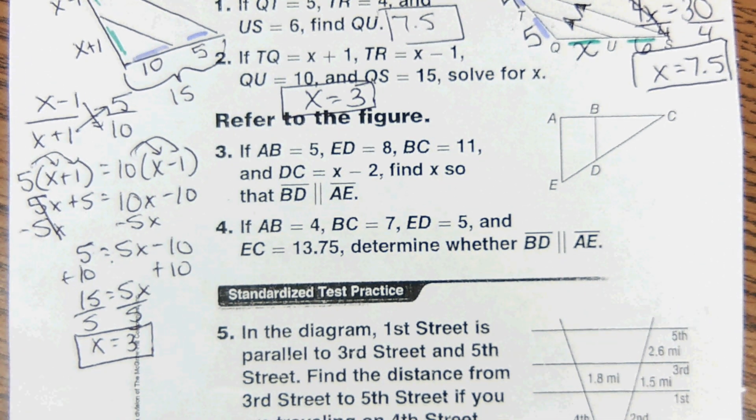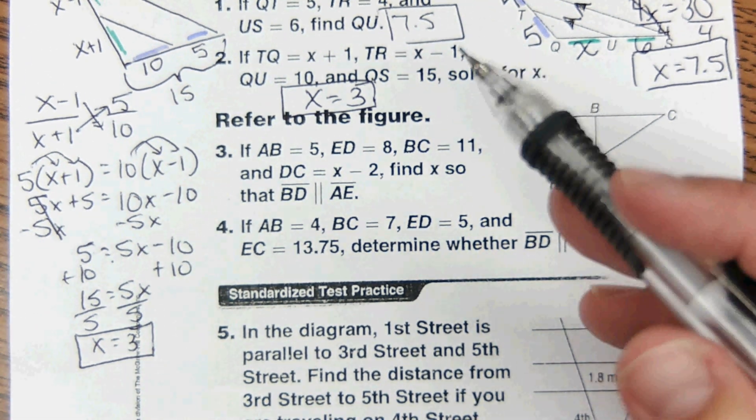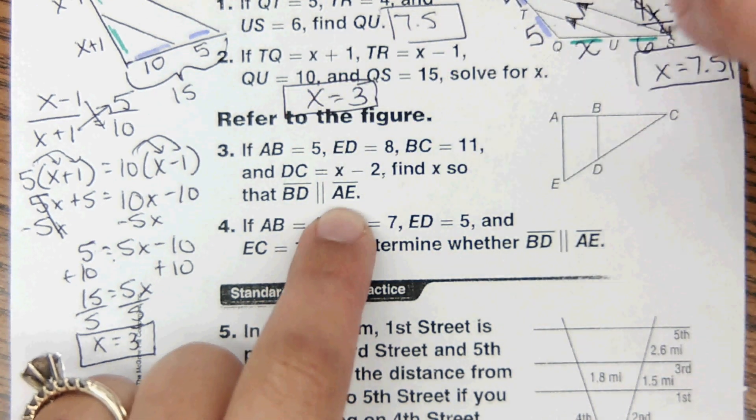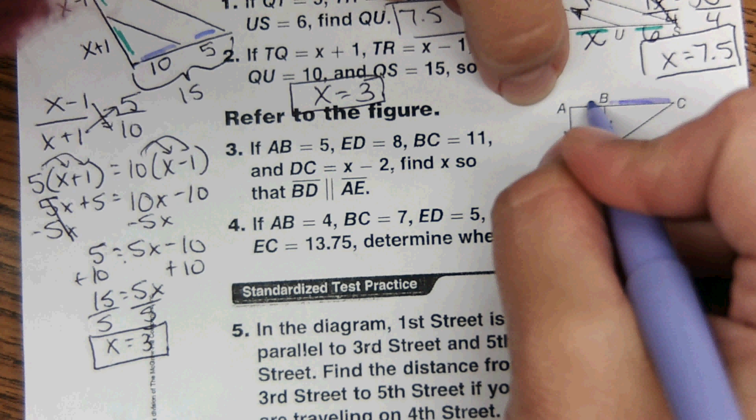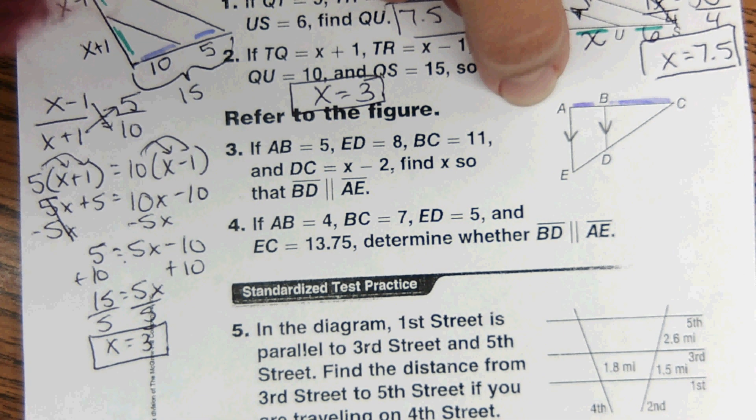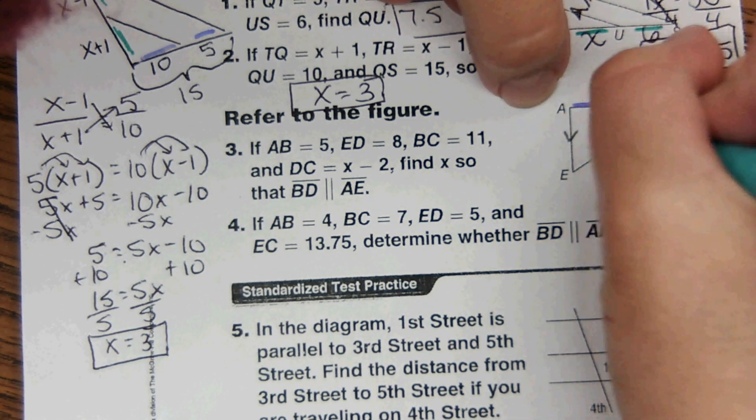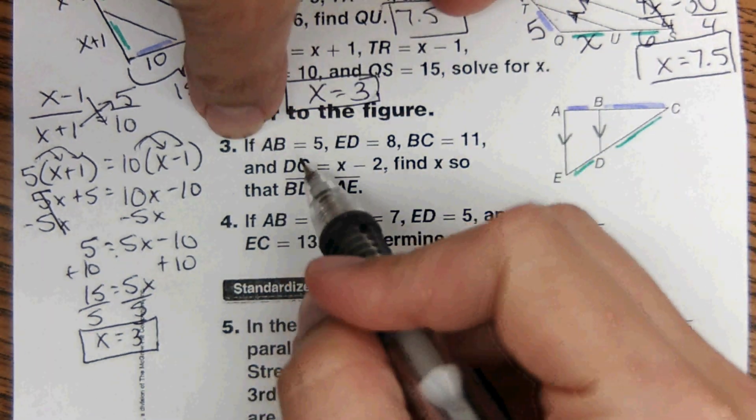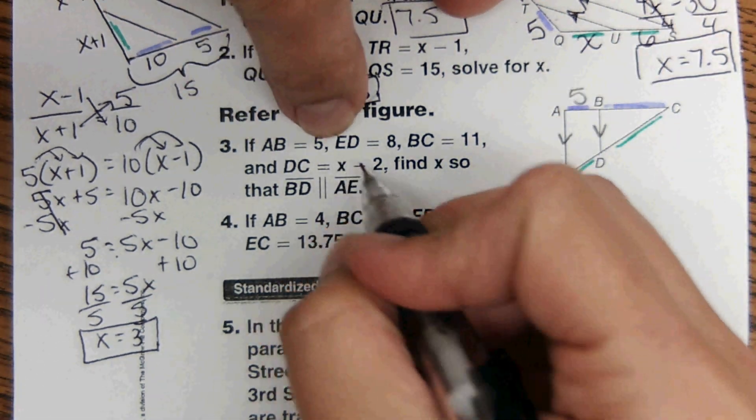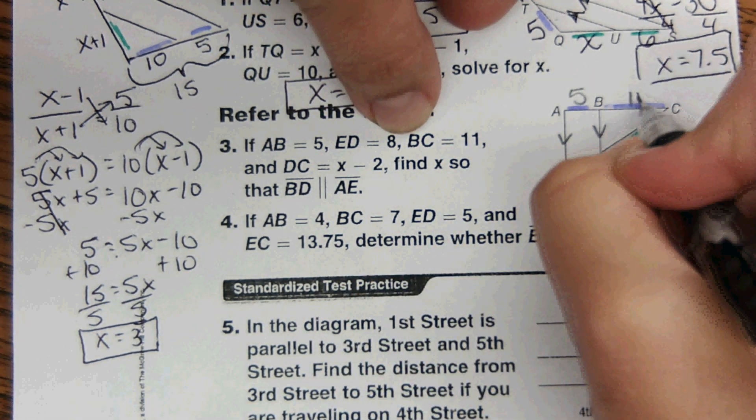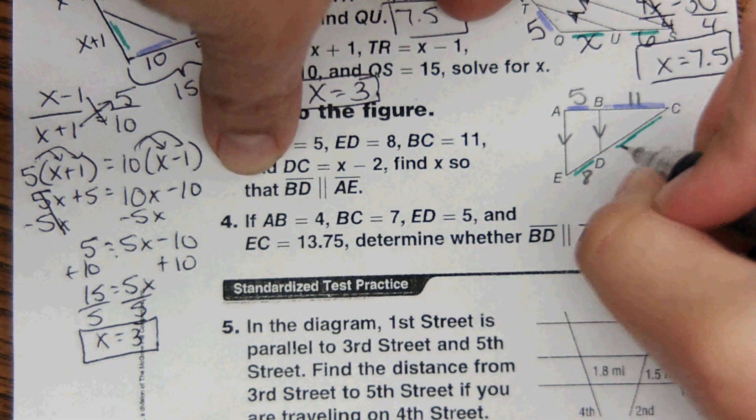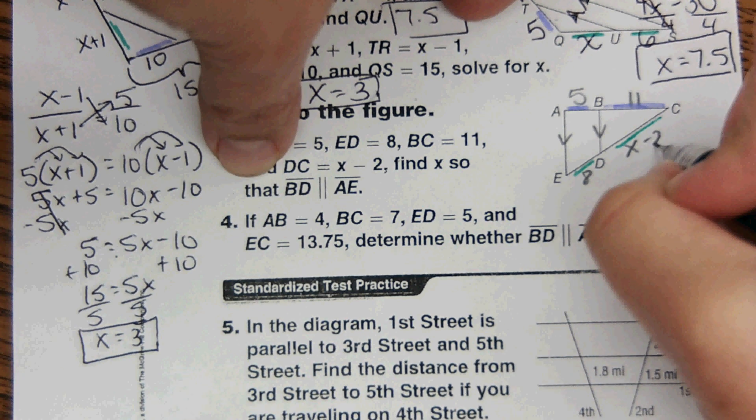Okay, number three. It says refers to the figure. It gives us different segment lengths. It says find x so BD is parallel to AE. Well if these are parallel then it has proportionality here. This is in proportion to this length and the same ratio that this is in proportion to this. So AB would be 5, ED is 8, BC is 11, and DC is x minus 2.